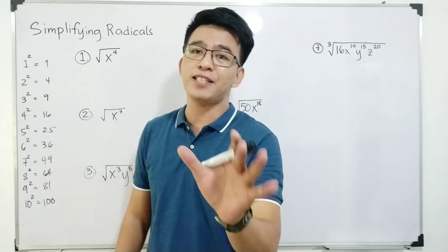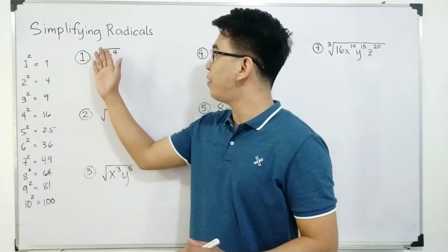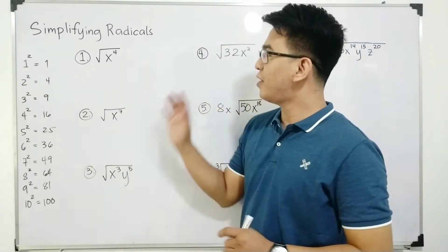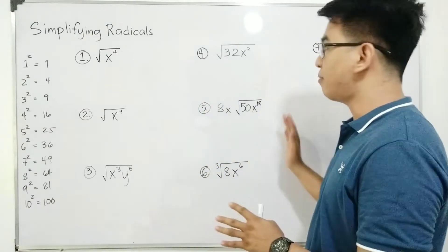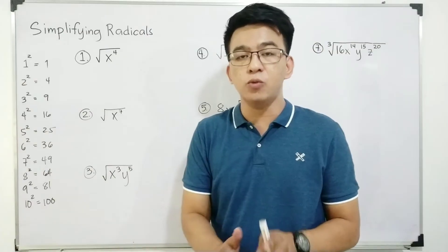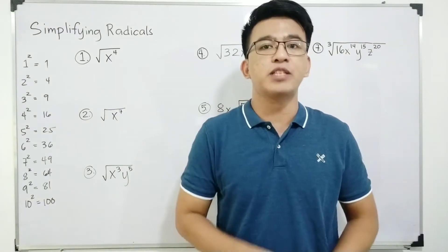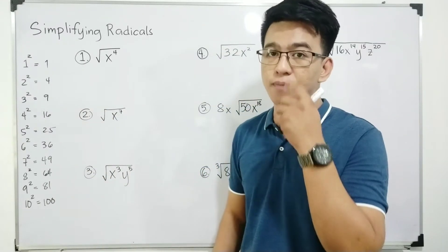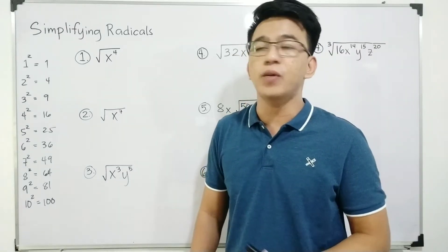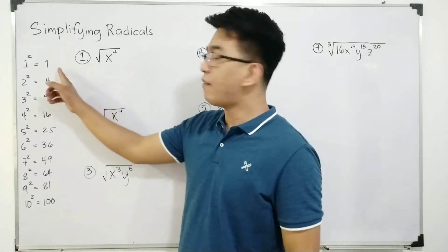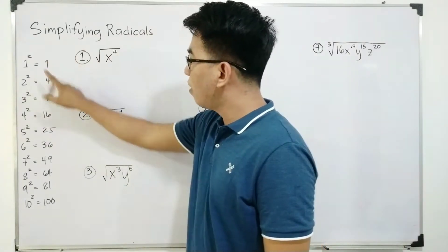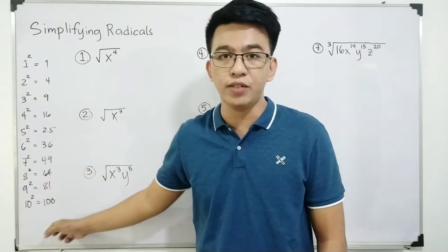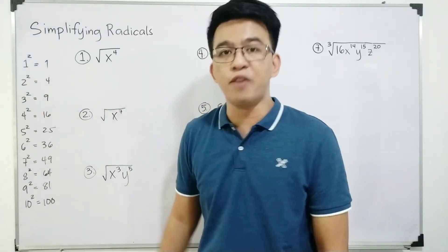Hi guys, it's me, Teacher. In our today's video, we will talk about how to simplify radicals. Before we start simplifying the items on the board, I would recommend that you memorize the first 10 perfect square numbers starting from 1 up to 100. It will help you in simplifying radicals. The perfect square numbers are 1, 4, 9, 16, 25, 36, 49, 64, 81, and 100.